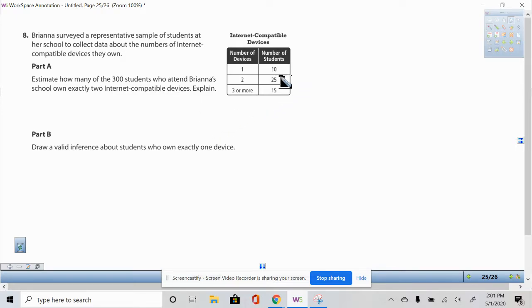So for two devices, there are 25 out of the total that we have here surveyed, which is 50. If we add up these numbers, 10 plus 25 plus 15, we get 50. So out of 50 students surveyed, 25 of these students had two devices.